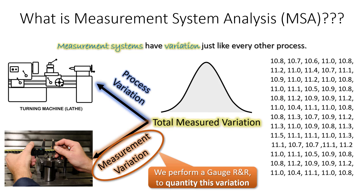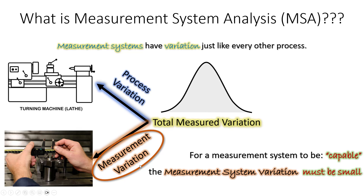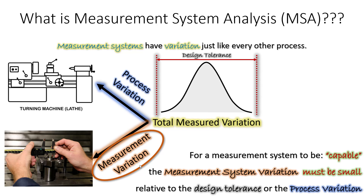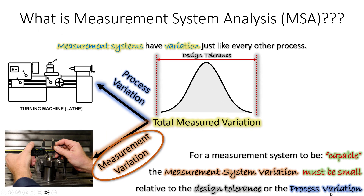That's why we do a gauge R&R — not just to quantify variation, but to evaluate whether we've chosen the right measurement system for the application. For a measurement system to be acceptable or capable for its intended purpose, the measurement system variation must be small relative to one of two things: either your design tolerance or your process variation. We'll talk about choosing between those two methods, when you'd use them, why, and how to do the calculations.